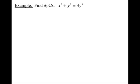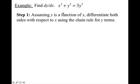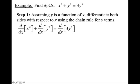Here's our example. We want to find dy/dx given x squared plus y squared equals 3y to the fifth. Your first step is to assume y is a function of x and differentiate both sides with respect to x, using the chain rule for the y terms. So that means I'm going to take the derivative with respect to x of x squared, plus the derivative with respect to x of y squared, equals the derivative with respect to x of 3y to the fifth.